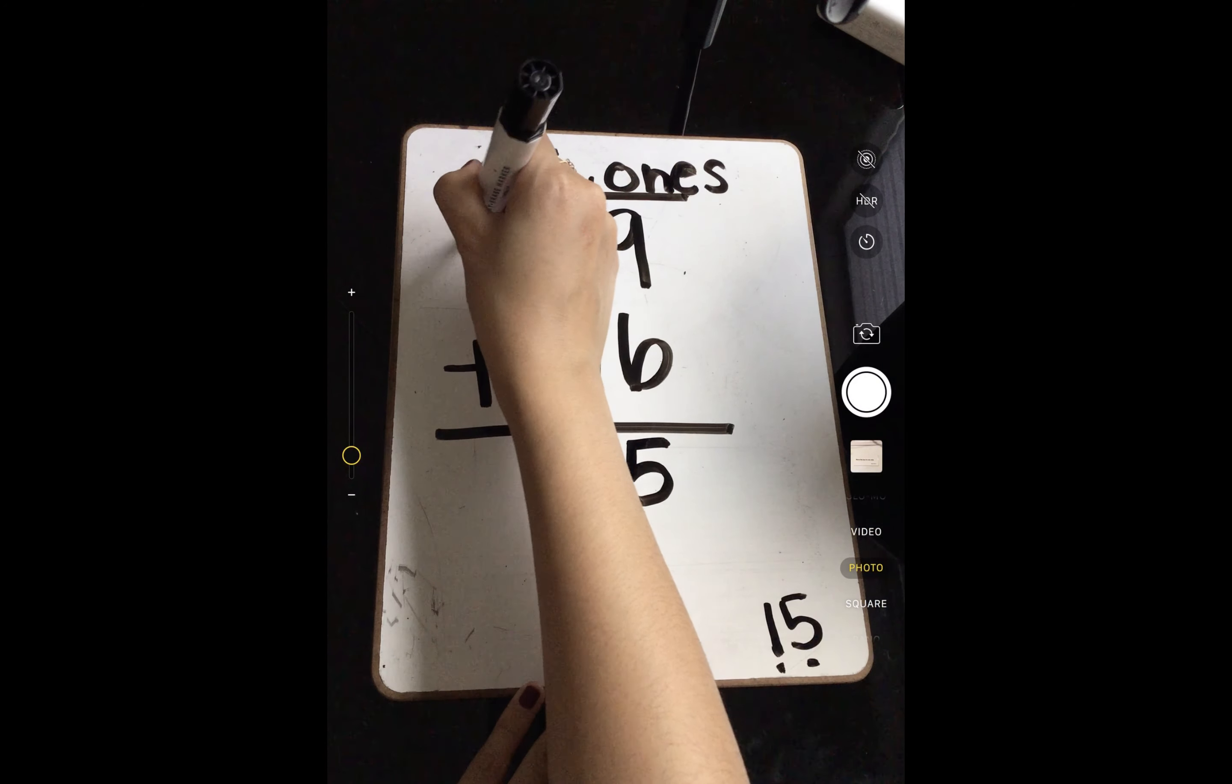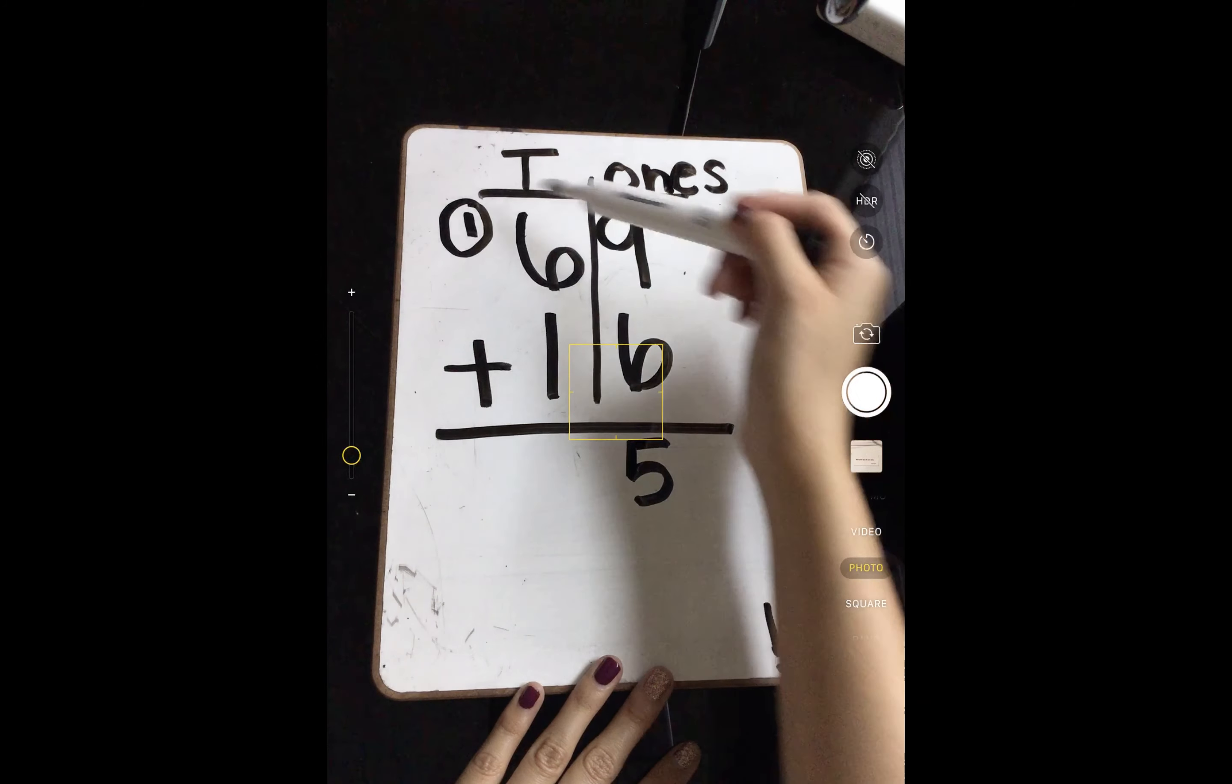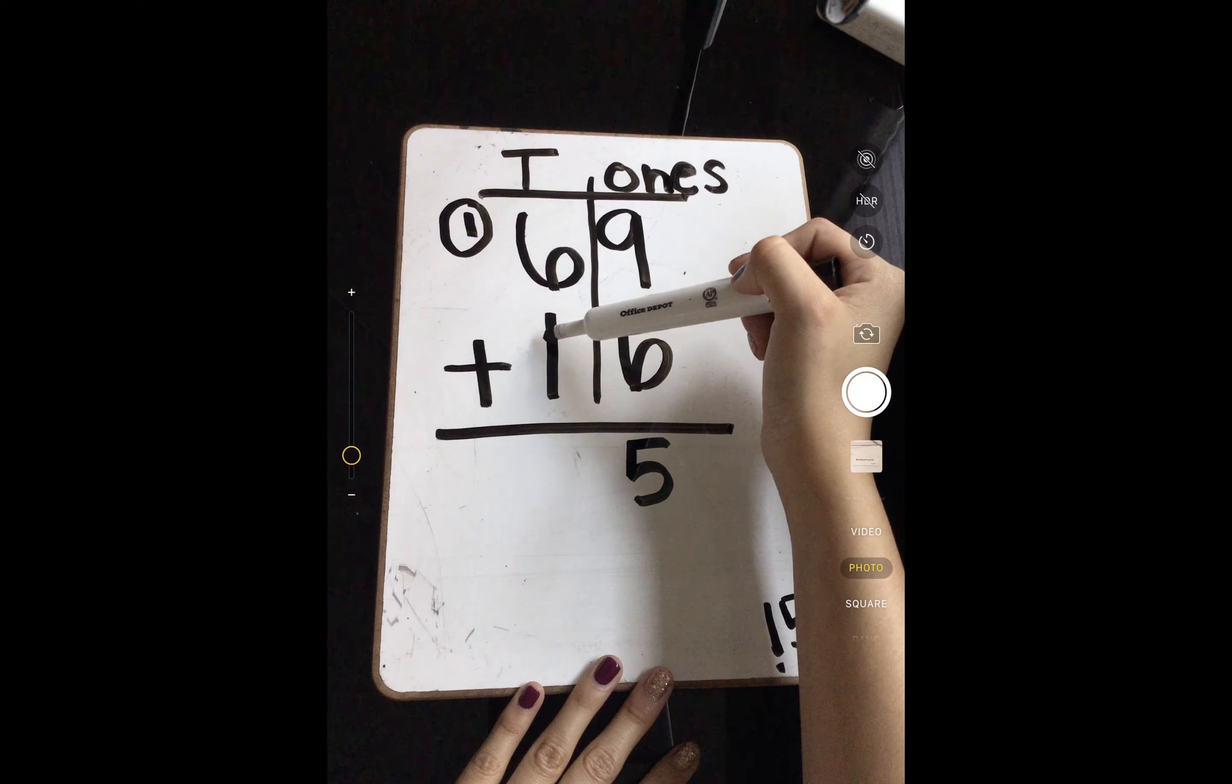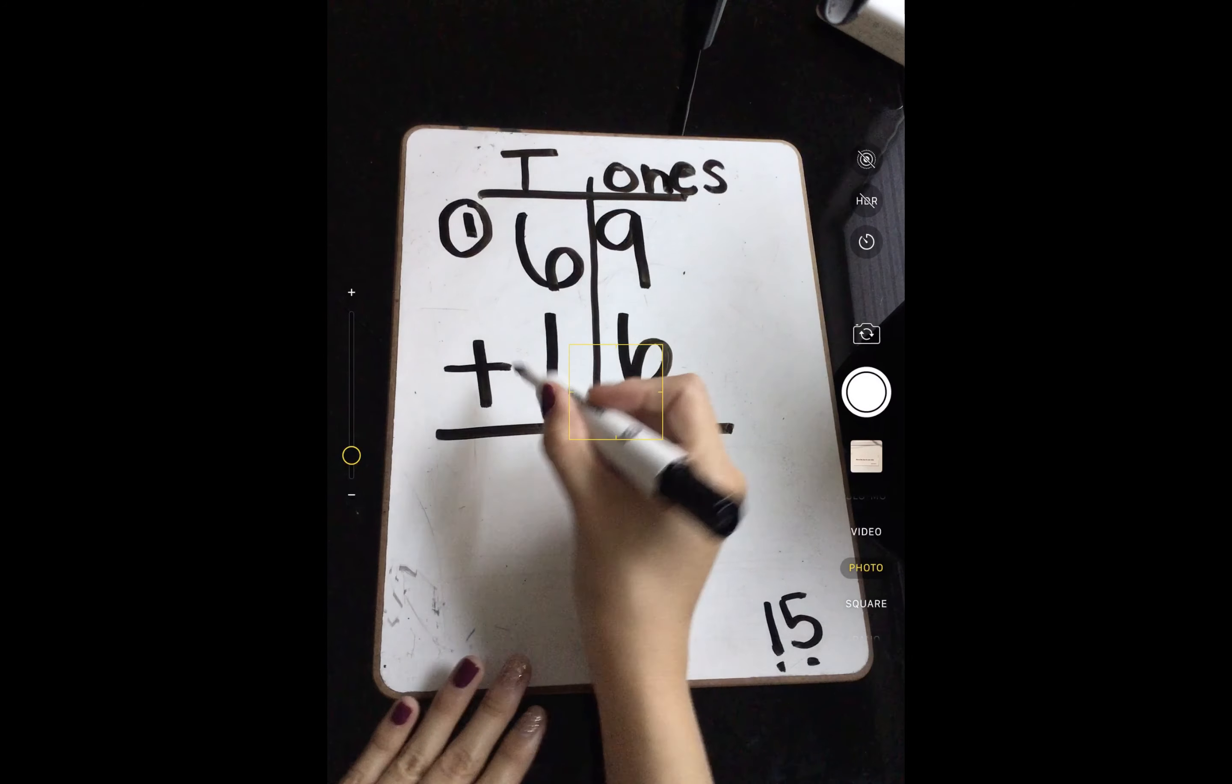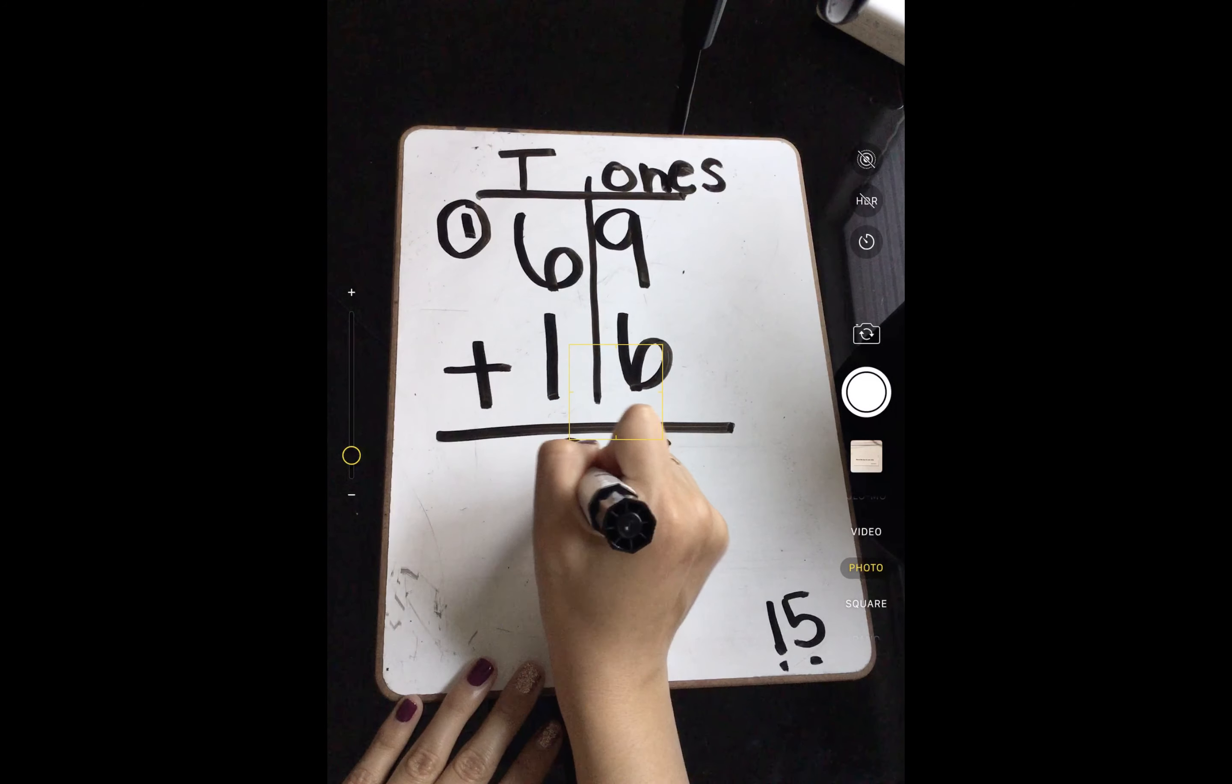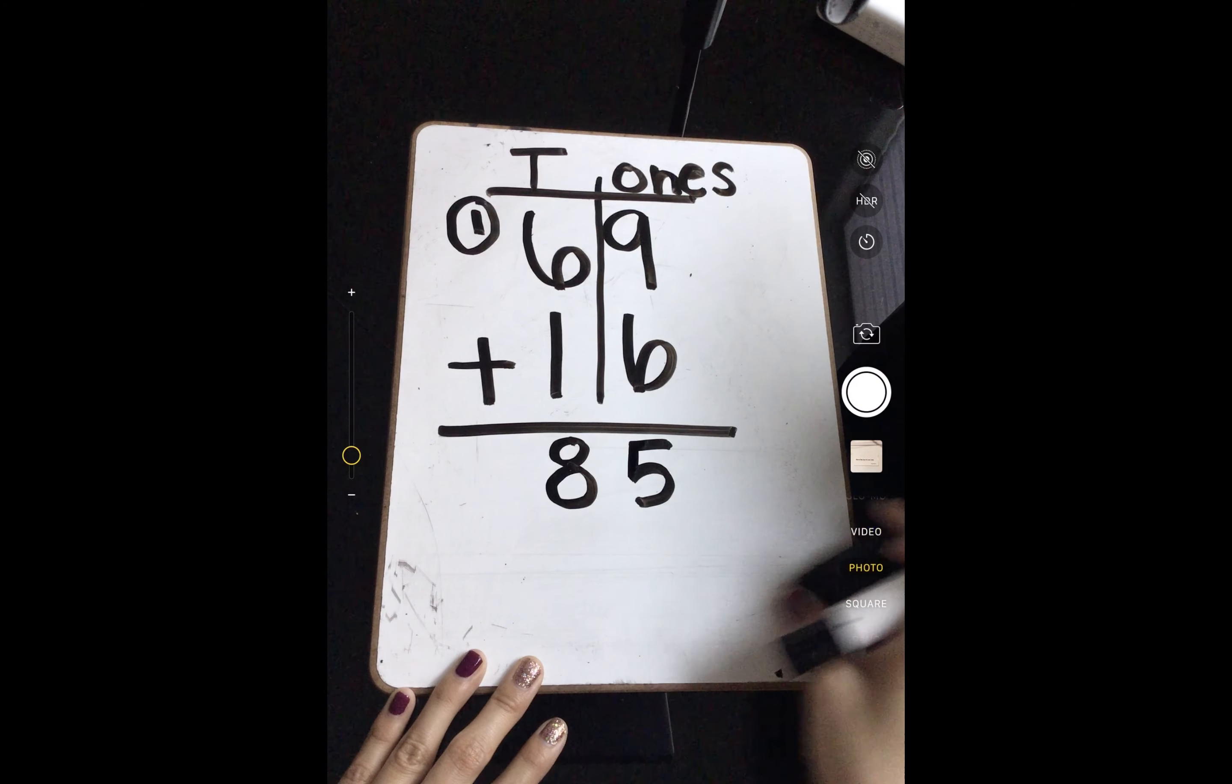Remember, that ten gets moved over here. So now I have to add my tens. 6, 7, but I can't forget to add that extra 1. So 6, 7, and 8. So I have 8 tens. So my sum is 85.